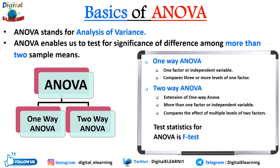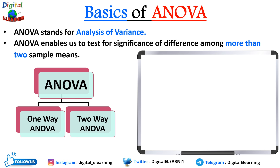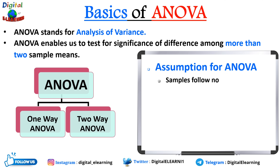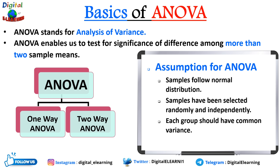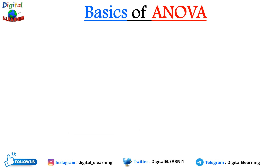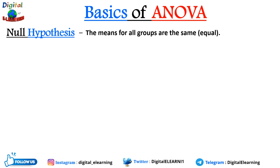The test statistic in ANOVA is the F-test. Some key assumptions for ANOVA are: the population from which the sample is drawn should follow a normal distribution; the samples have been selected randomly and independently; each group should have a common variance; and data are independent. The null hypothesis for ANOVA states that the means for all groups are equal: H₀: μ₁ = μ₂ = μ₃ = ... = μₙ.